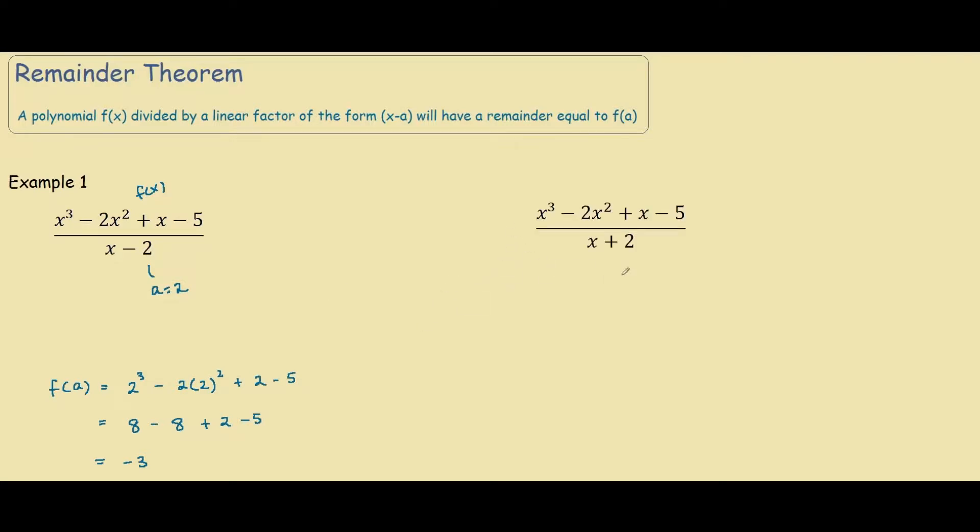Ok guys so over here I made a new example. In this case we have an x plus 2 as our linear factor. So we apply the same thing except it's slightly different over here. Instead of a negative we have a plus. So what we can think of for this example is as x minus negative 2. And now this negative 2 over here is our a.